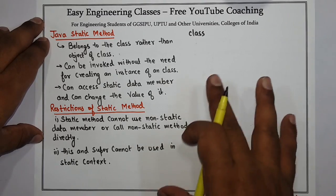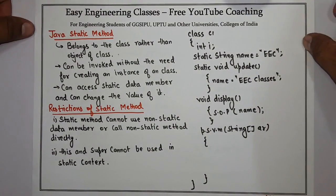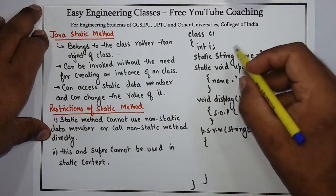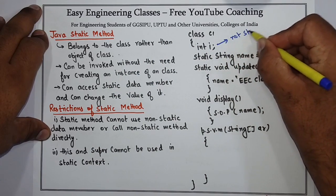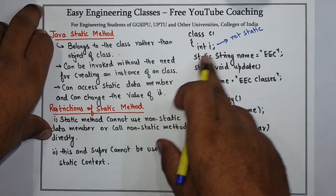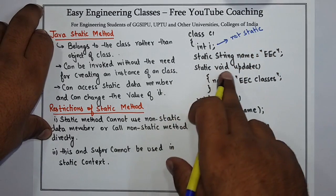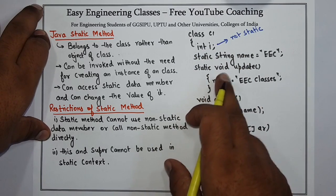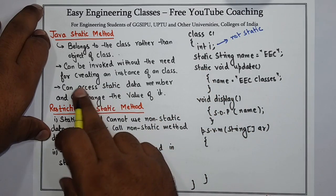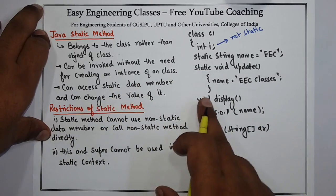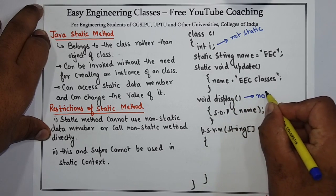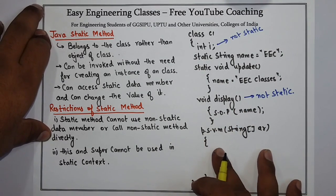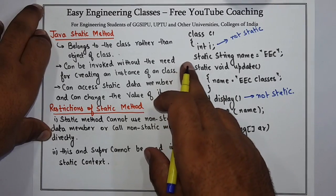Let's create a simple example of using Java static method. I have created a class C1. One simple variable int i — this variable is not static. One static variable: static String name, with initial value EEC. Then one method void update which is updating the value of the static variable. I am using this static variable directly and changing its value in the static method — this demonstrates that a static method can access static data members and change their value. There is also a display method which is not a static method, and in it I am just displaying the value of the name variable.